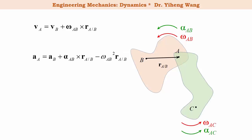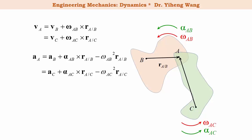During problem solving, of particular interest are points that belong to more than one rigid body — normally these are joint points. For example, point A belongs to not only rigid body AB but also rigid body AC. Therefore its linear velocity and linear acceleration can also be determined through rigid body AC, where rA/C is the relative position of A with respect to reference point C. During problem solving, this provides the additional equations needed to solve the problem.